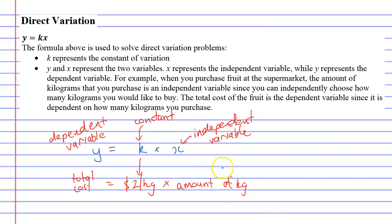The amount of kilograms you buy is independent because you get to choose how many kilograms of fruit you would like to buy. The total cost is dependent because it depends on how many kilograms of fruit you buy as to what the cost will be. Which is why we call it dependent. It is dependent on the independent variable.